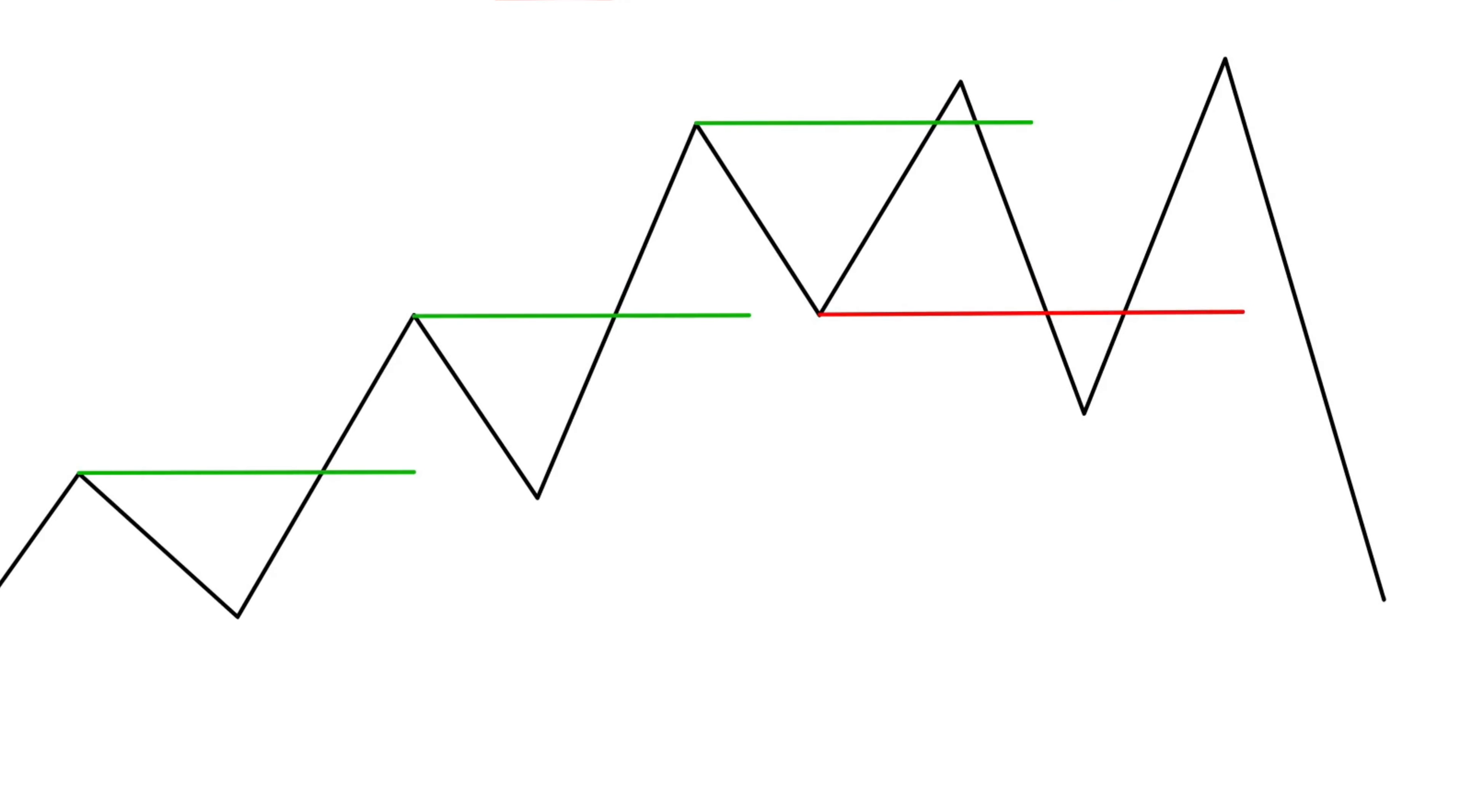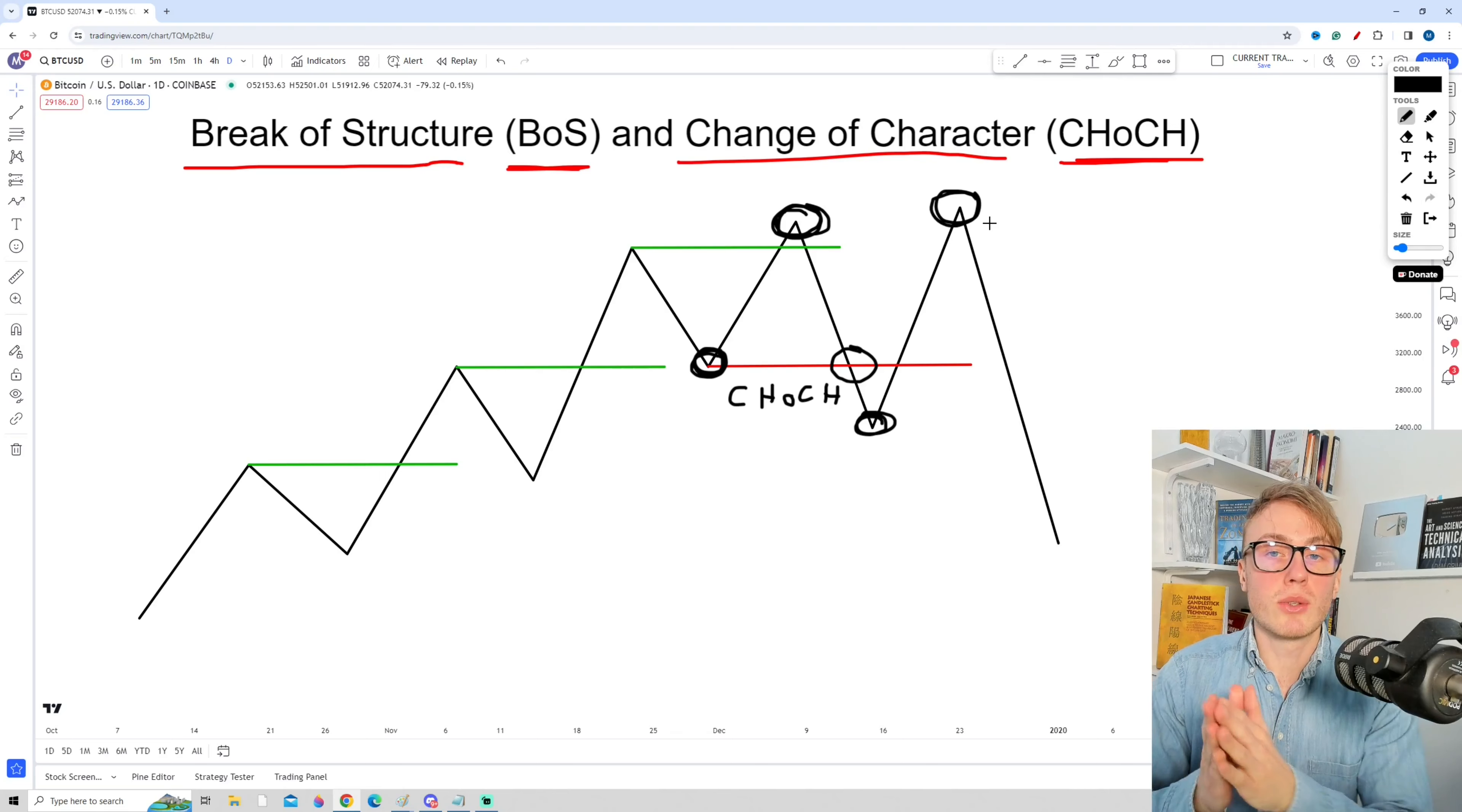If you take a look at this new chart, this point right here is still a change of character. Nothing has changed about this break because this one makes it so that we now have a low and then a lower low. However, at the same time, the price is now also printing one high right here and then a higher high. So now the price is printing both lower lows and higher highs.